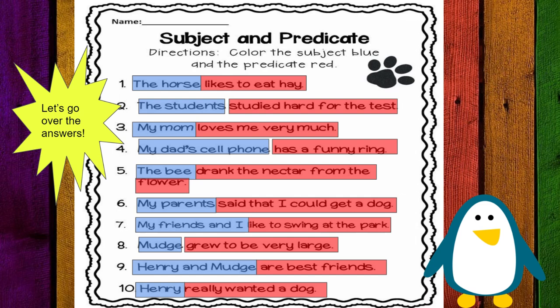My parents said that I could get a dog. My parents is the subject. Said that I could get a dog is the predicate. My friends and I like to swing at the park. My friends and I are the subjects. Like to swing at the park is the predicate.